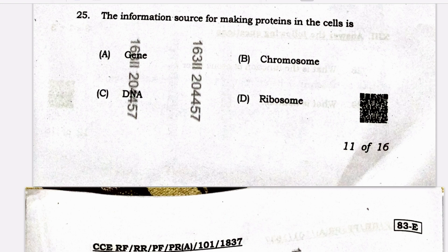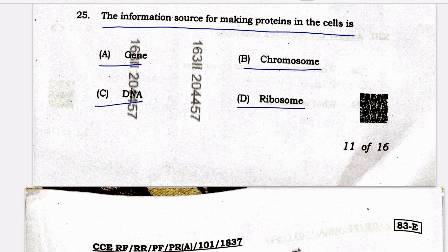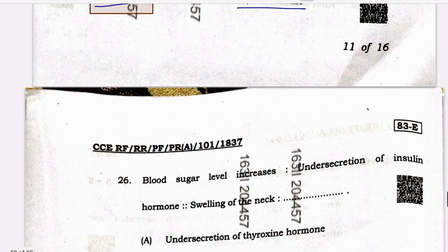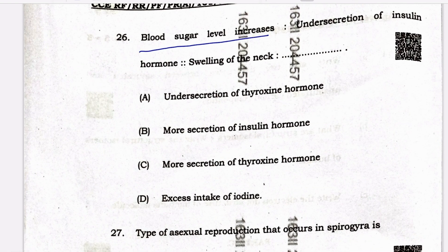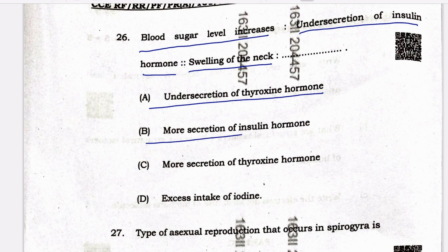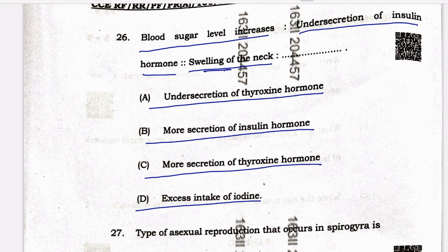Question 25: the information source for making proteins in the cells is — option A: gene, option B: chromosome, option C: DNA, option D: ribosome. The correct answer is option C, DNA. Question 26: swelling of neck is due to — option A: undersecretion of thyroxin hormone, option B: more secretion of insulin hormone, option C: more secretion of thyroxin hormone, option D: excess intake of iodine. The correct answer is option A, undersecretion of thyroxin hormone.